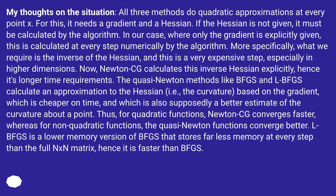My thoughts on the situation: all three methods do quadratic approximations at every point x. For this, it needs a gradient and a Hessian. If the Hessian is not given, it must be calculated by the algorithm. In our case, where only the gradient is explicitly given, this is calculated at every step numerically. More specifically, what we require is the inverse of the Hessian, and this is a very expensive step, especially in higher dimensions.